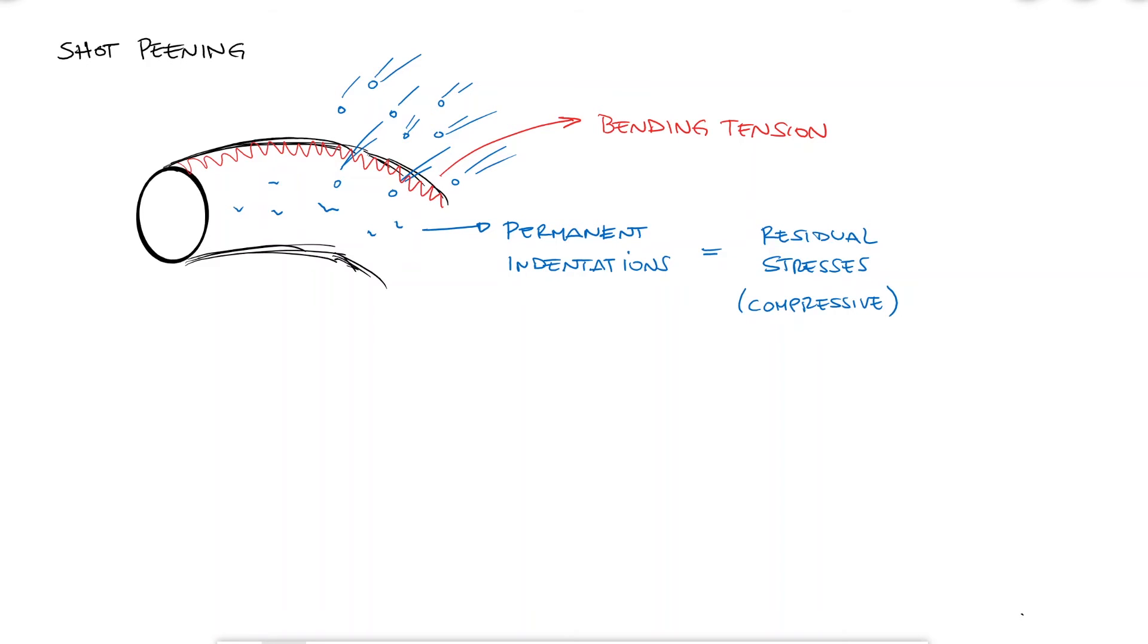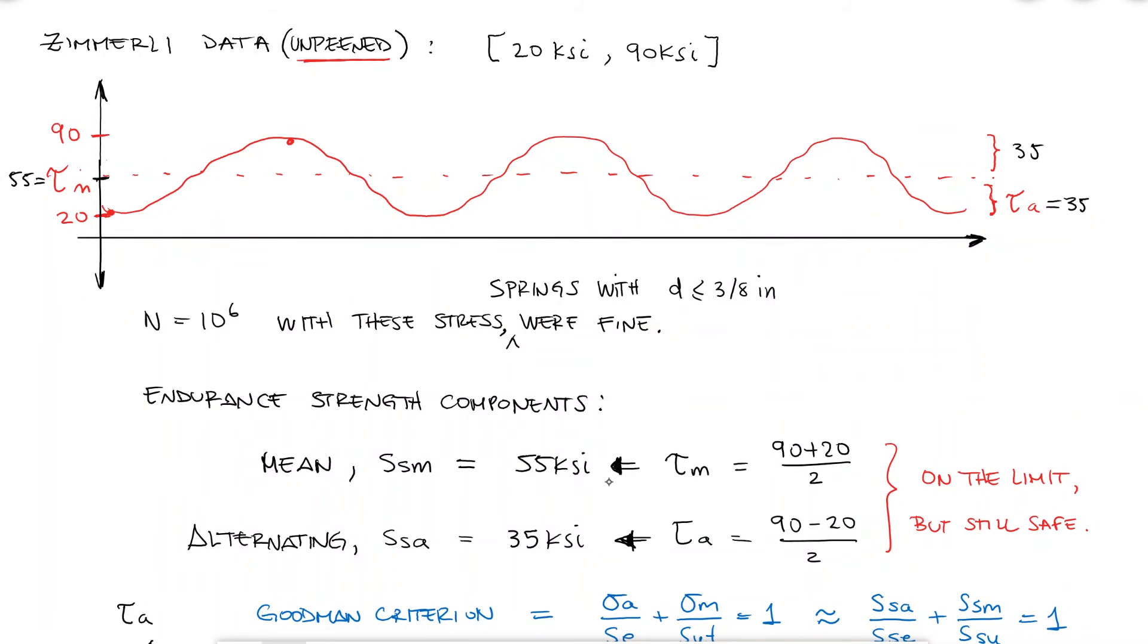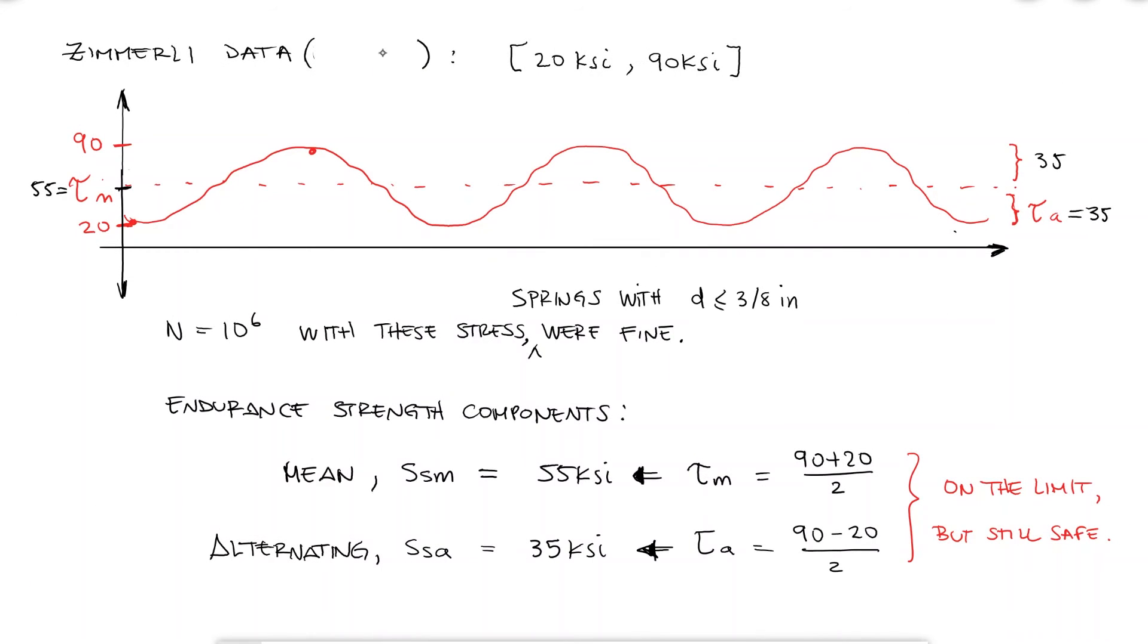You can check out a one minute animation video where shot peening is very clearly illustrated in one of the links in the description of this video. The reason I mentioned unpeened springs when talking about the Zimmerli tests earlier is because tests were also performed for the more resistant peened springs. The only difference here is that the range of stresses that were used for peened springs were of course higher, with a range from 20 to 135 ksi. Still safe for infinite life.